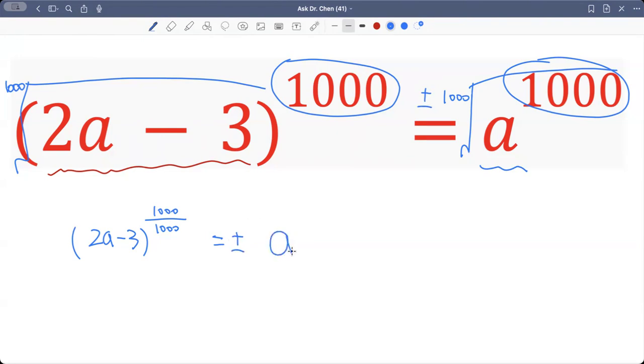Same thing. This is a raised by 1000 divided by 1000. Well, 1000 divided by 1000 is just 1, so we get 2a minus 3 equals plus minus a.